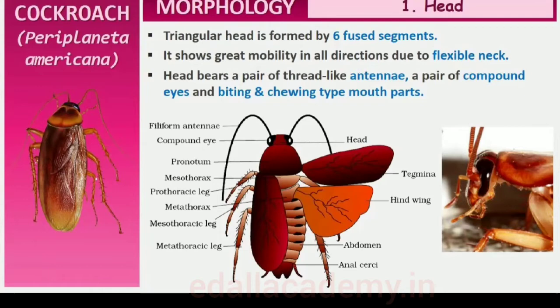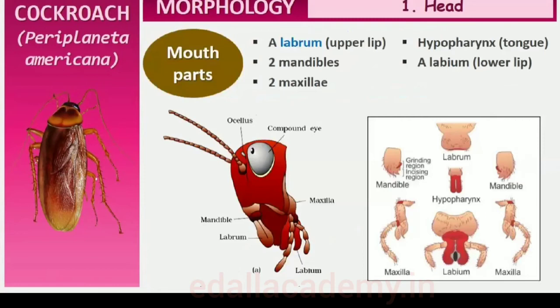The anterior end of the head bears appendages forming biting and chewing type of mouth parts. The mouth parts consist of a labrum (upper lip), a pair of mandibles, a pair of maxillae, and a labium (lower lip). A median flexible lobe acting as tongue, called hypopharynx, lies within the cavity enclosed by the mouth parts.